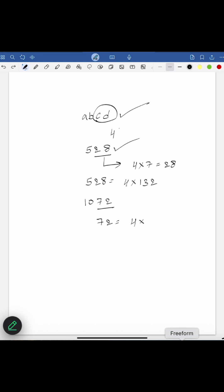We can write 72 as 4 times 18 which equals 72. So 1072 is divisible by 4. We can write 1072 as 4 multiplied by 268. So 1072 is divisible by 4.